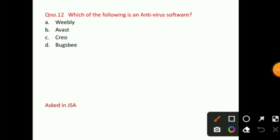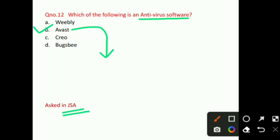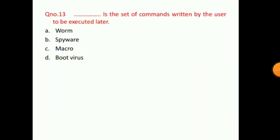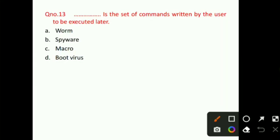Question number 12: Which of the following is an antivirus software? The right answer for question number 12 will be option B, that is Avast. Avast also has an acronym — it stands for Advanced Set. Question number 13: Dash is a set of commands written by the user to be executed later. The right answer for question number 13 will be option C, that is macro. We save the set of commands as a macro and then execute them later.